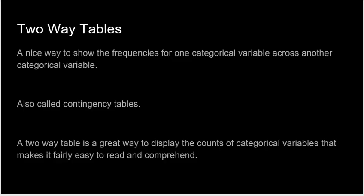Another very typical way to represent two categorical variables is a two-way table. This is a nice way to show the frequencies — that is, the counts — for one categorical variable across another. Some people also call these contingency tables, but the term two-way table is most common. This is a great way to display counts that is very easy to read and comprehend.